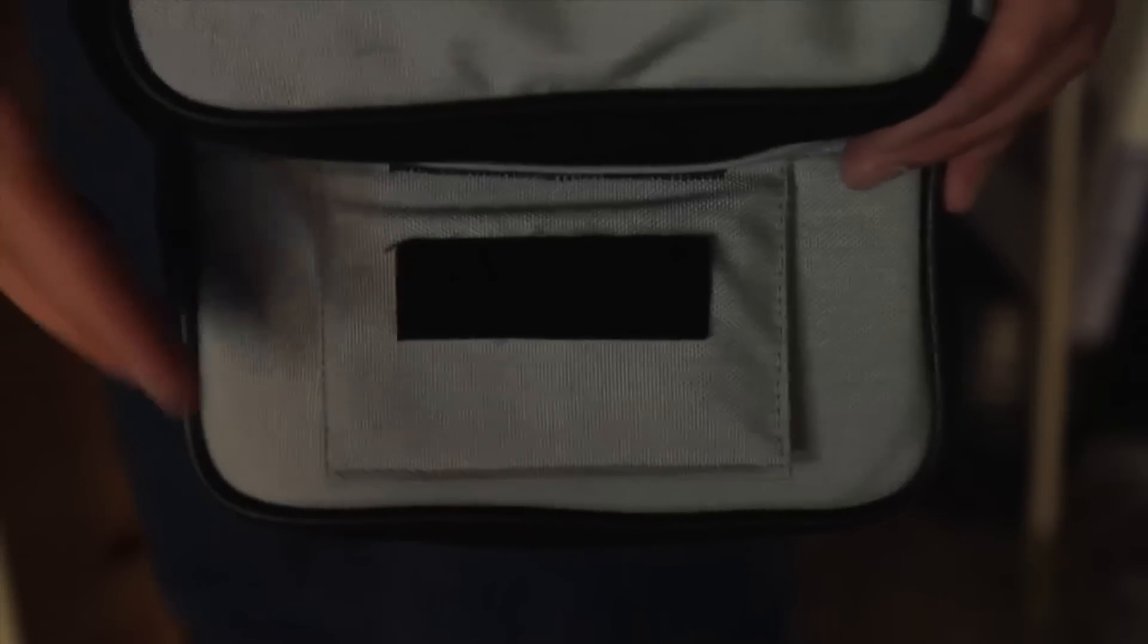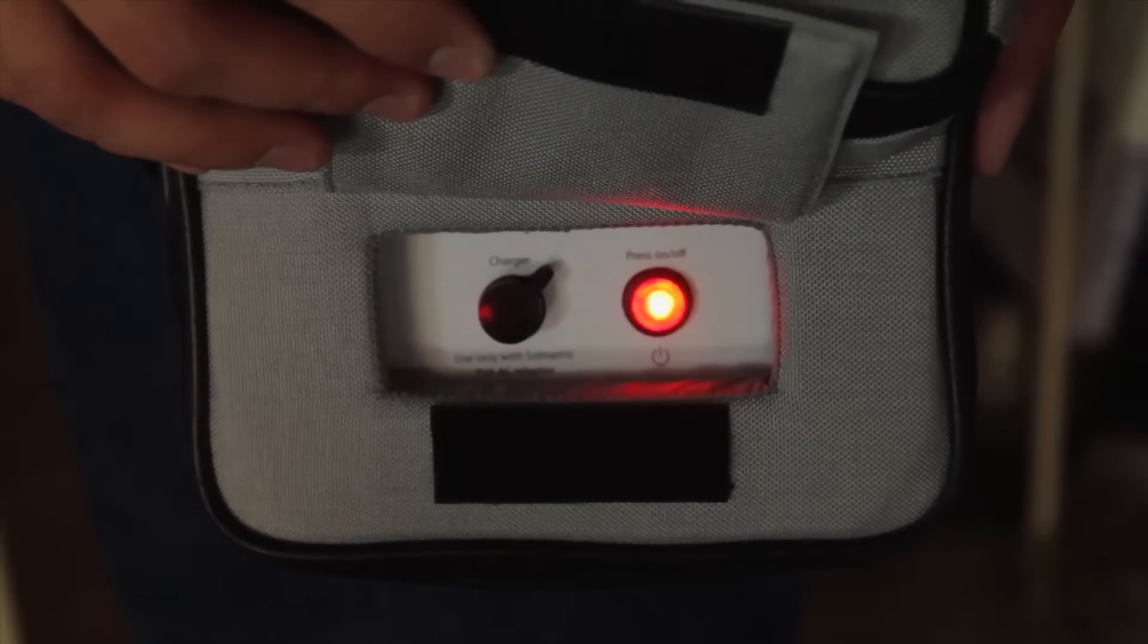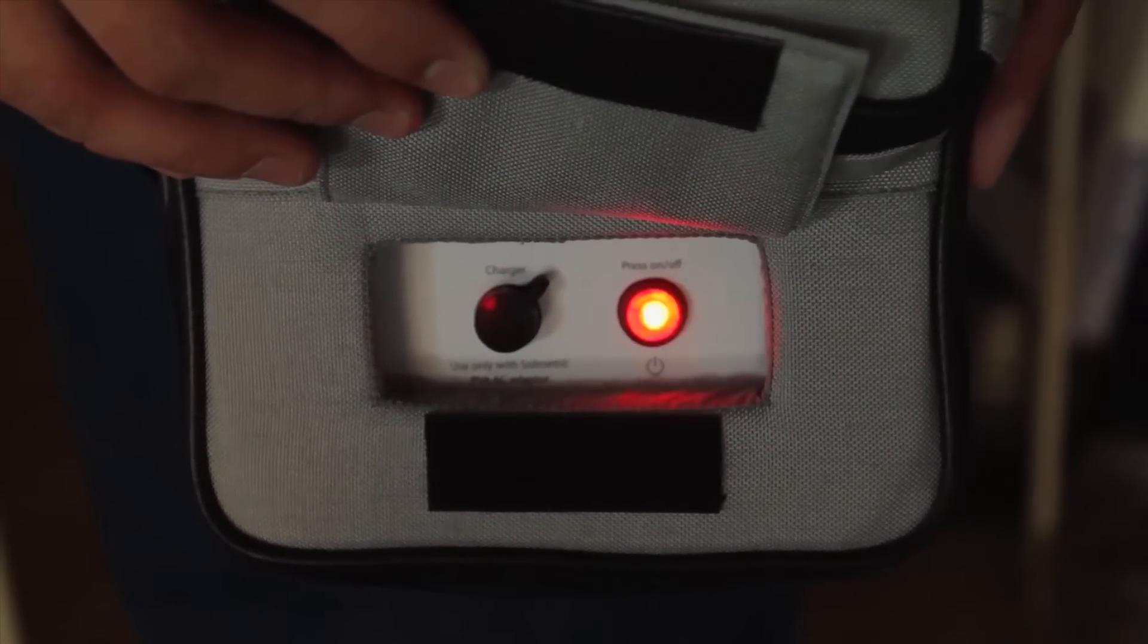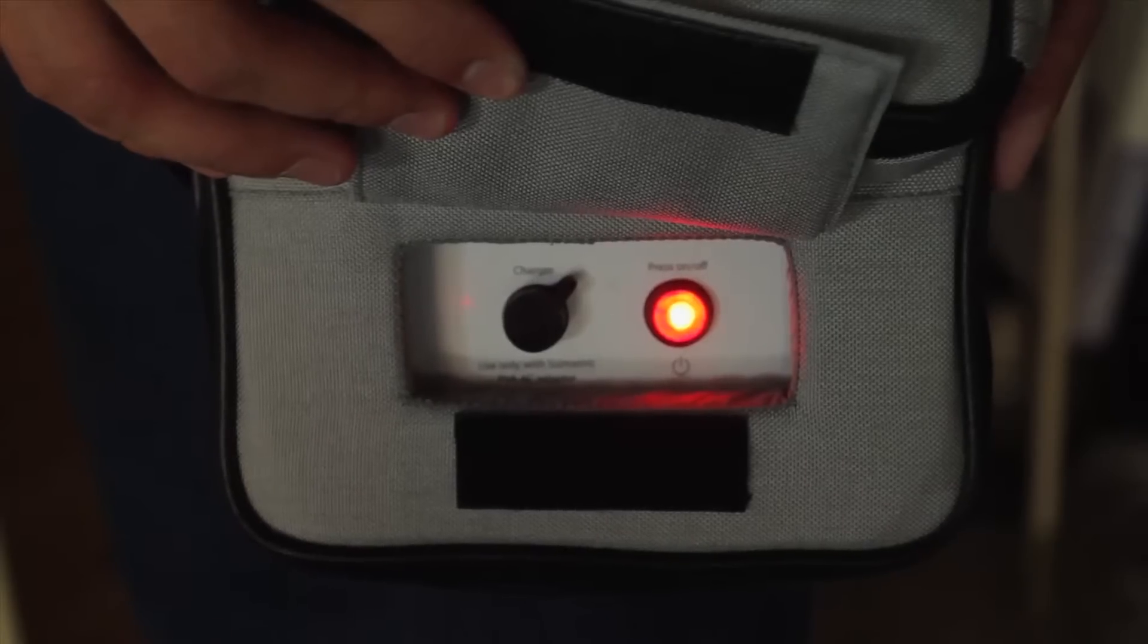Once it is connected to a module or string, turn the measurement unit on by pressing the power button, which is located at the front side of the unit next to the charging port. The light on the button will blink to indicate that the unit is searching for the wireless USB adapter.